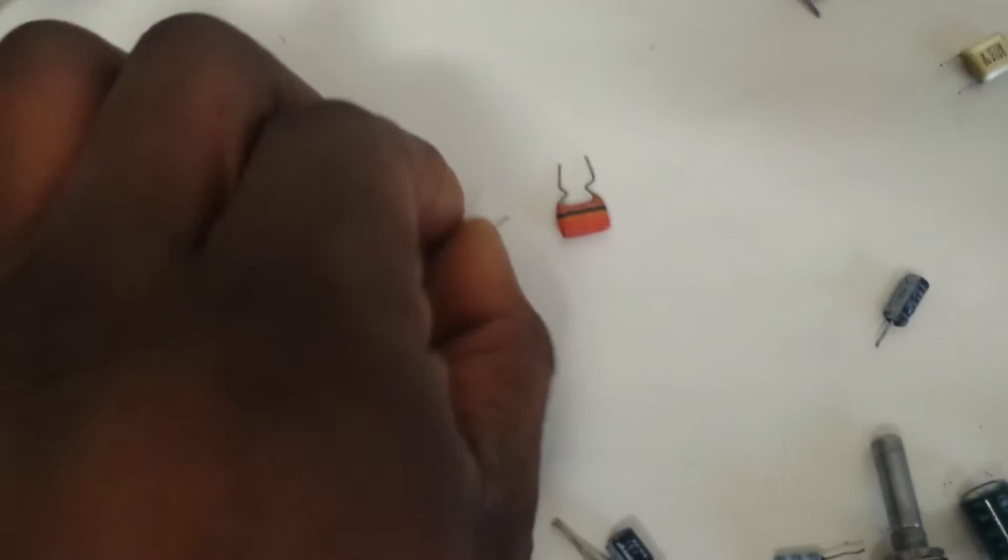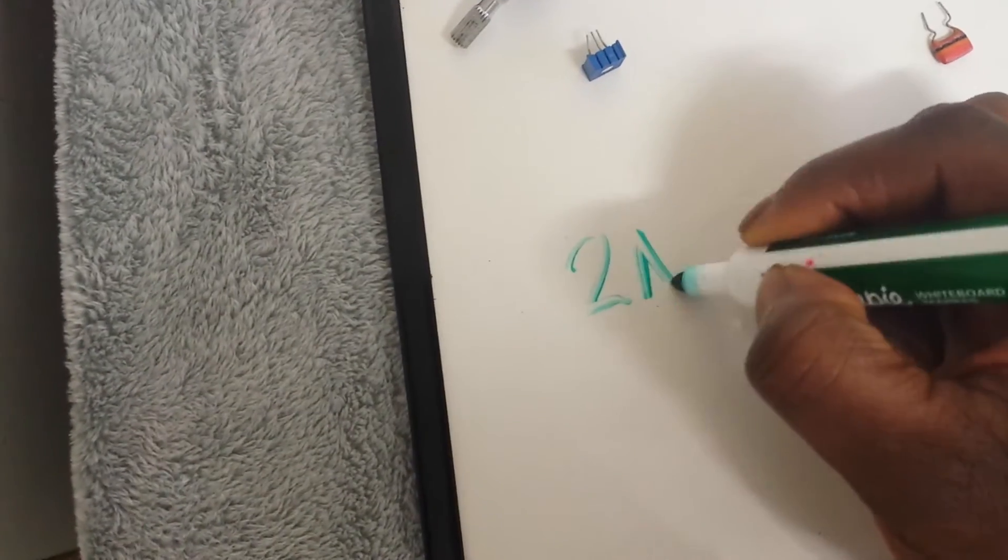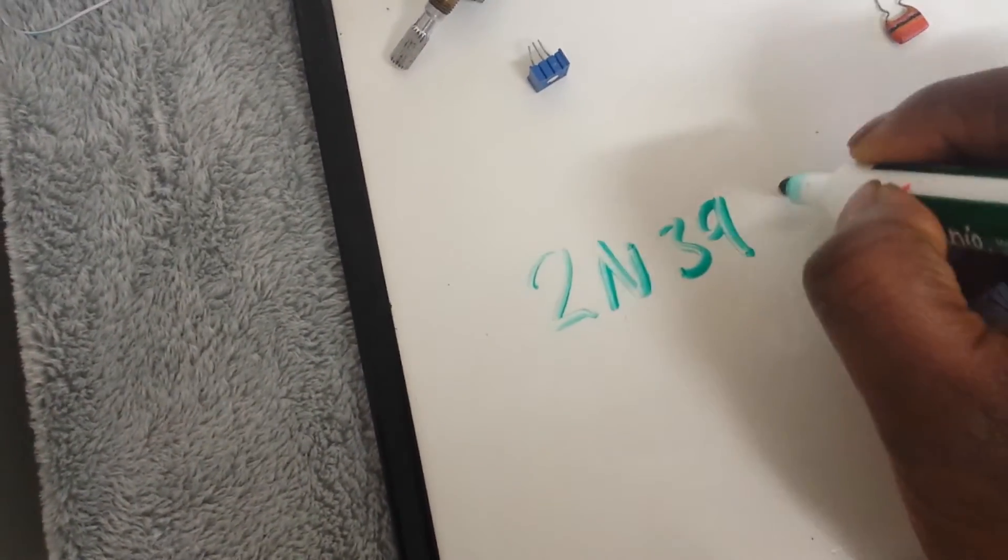Again like I said there's a variety of capacitors here and the resistors as well. Just make sure you get your hands on as many as you can. Transistors, NPN sort of general purpose, we have like the 2N3904 which is an NPN general purpose very common.